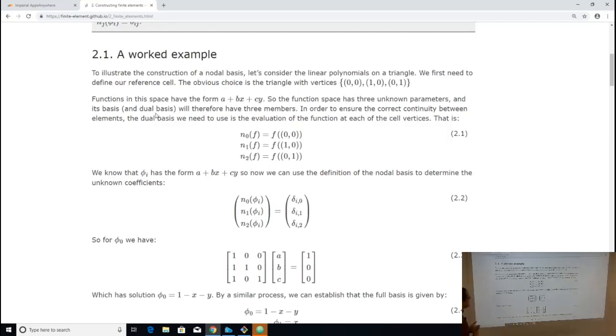So my first node, node zero—I'm a Python programmer, I count from zero—node zero is the function evaluated at the origin. Node one is the function evaluated at the point one zero. And node two is the function evaluated at the other vertex, which is zero one.